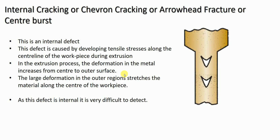The third and last defect in the extrusion process is internal cracking, also called chevron cracking, arrowhead fracture, center burst, or center cracking. As the name indicates, internal cracking is an internal defect — whatever cracking is formed or developed in the extruded object is inside that object.